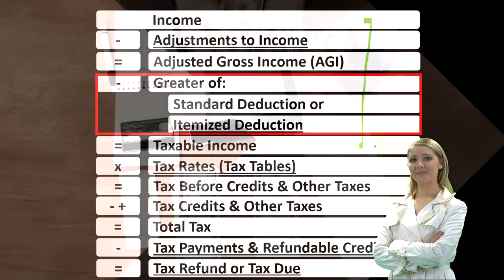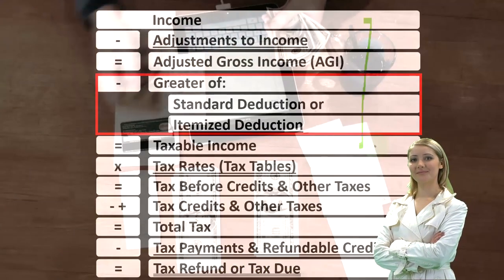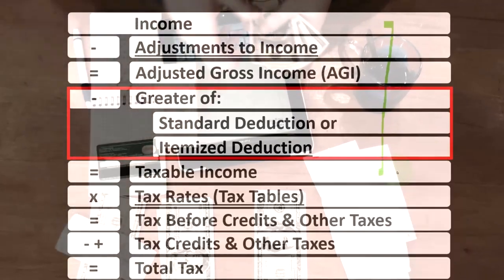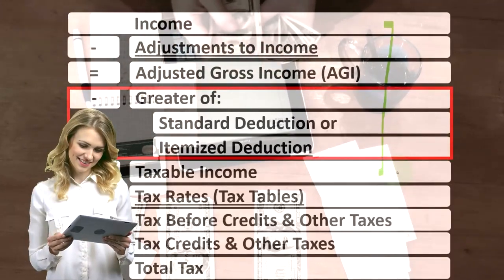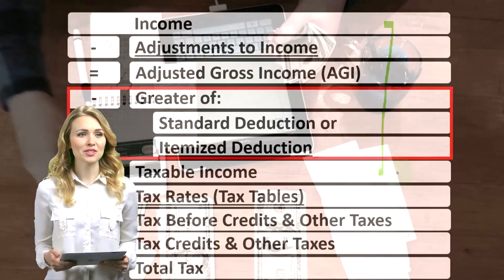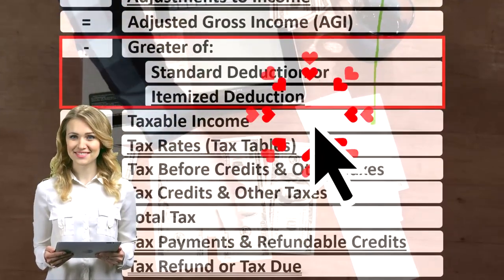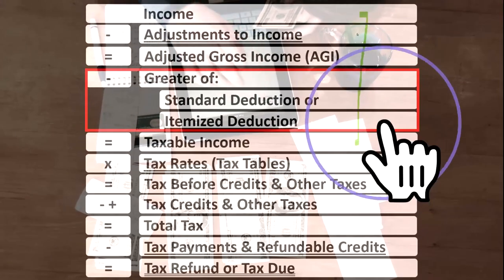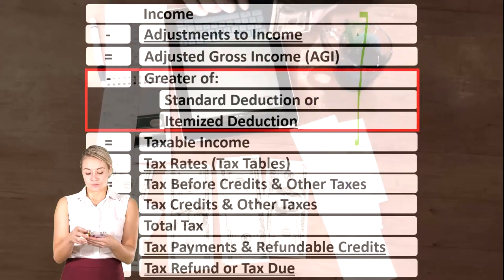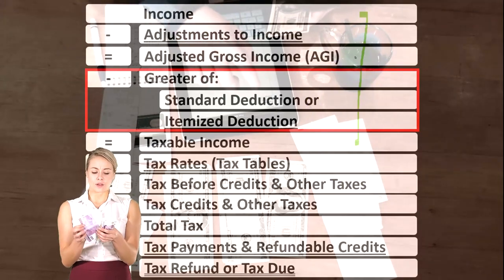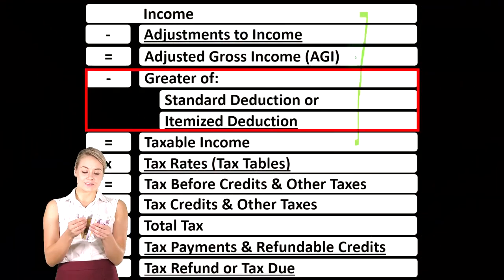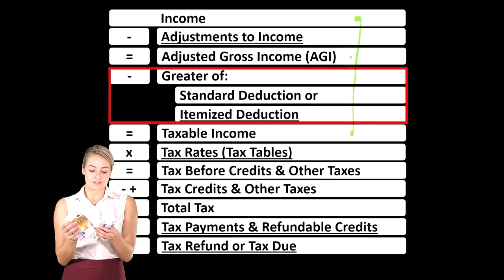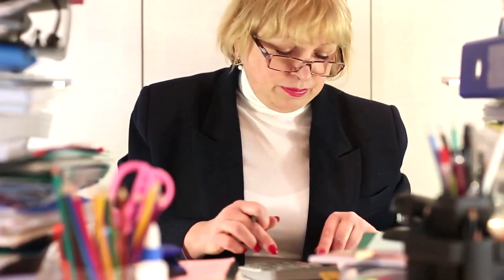That equivalent is taxable income — everything flipped on its head. We want taxable income as low as possible, as opposed to normally wanting net income as high as possible. We've got income minus the different kinds of deductions. We looked at the above-the-line deductions or adjustments to income in a prior section, which got us to the subtotal of adjusted gross income — a very important subtotal, often used to think about phase-outs as income rises, phasing out deductions and credits.